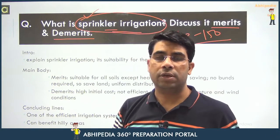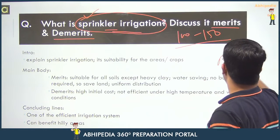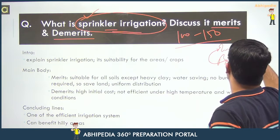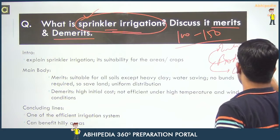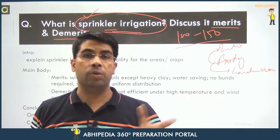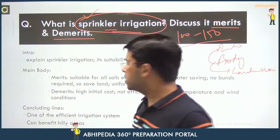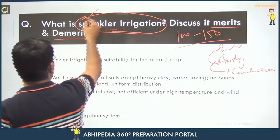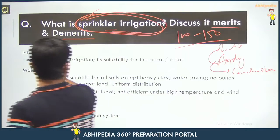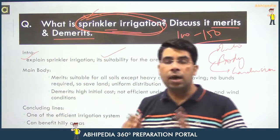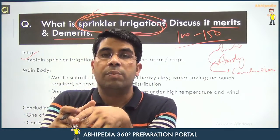Again comes the structure of this answer — the structure of the main body. So we may explain how the body is structured. So, micro-irrigation: we will explain what it is.